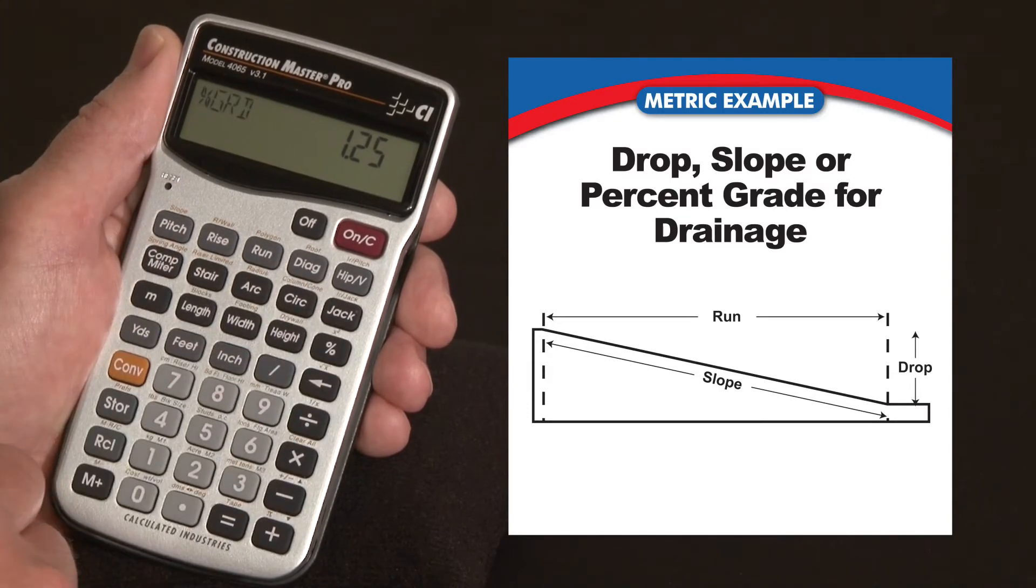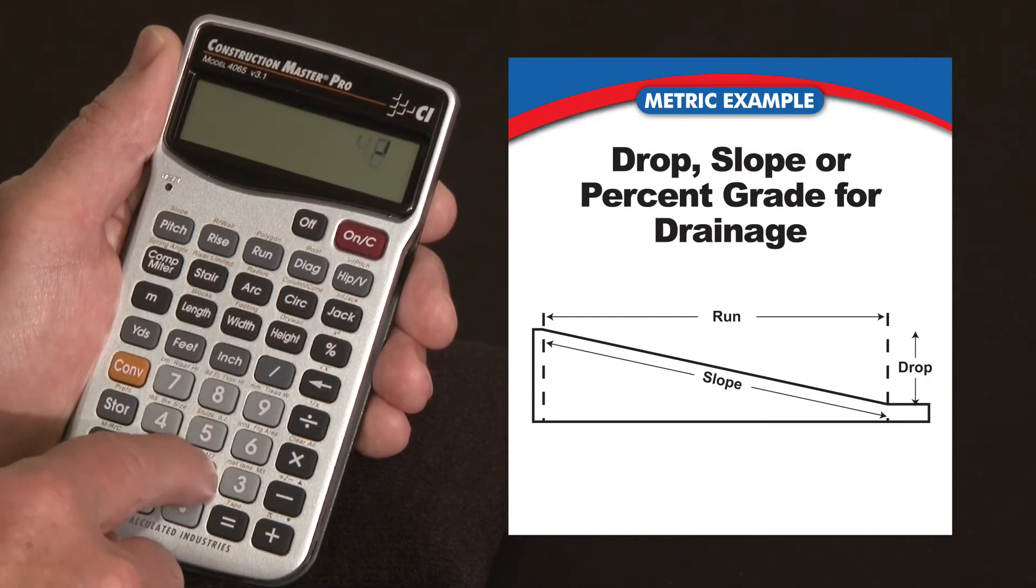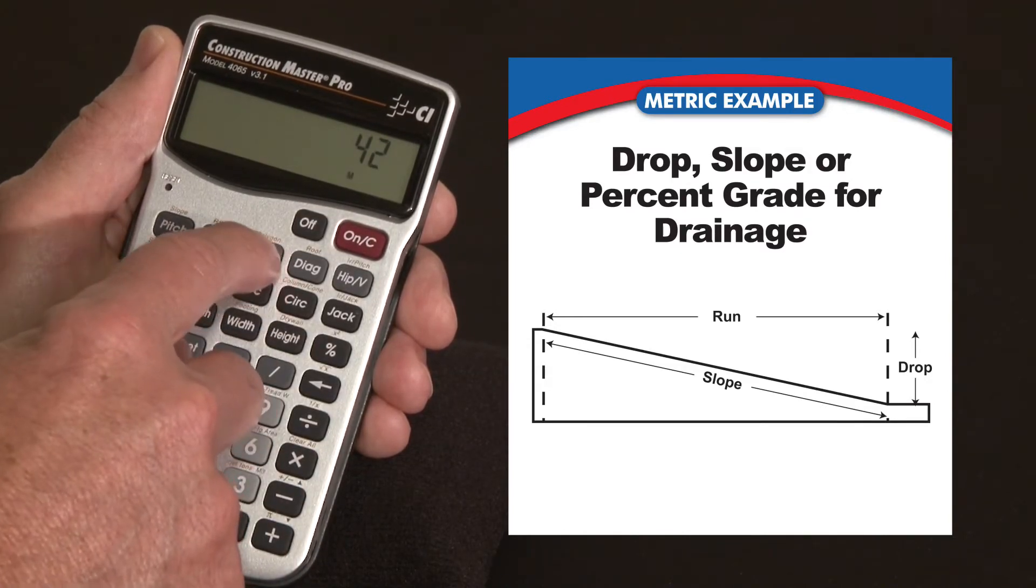Now an application where you might use something like this is if you've got a new piece of land that you're looking at developing and you're wondering if it'll drain. Say it's 42 meters long, 42 meters, we'll enter that as the run.